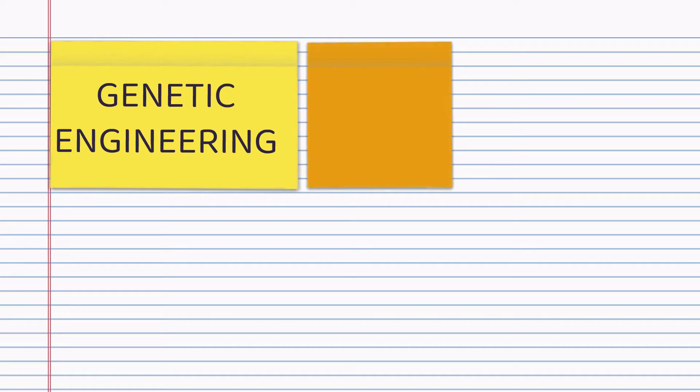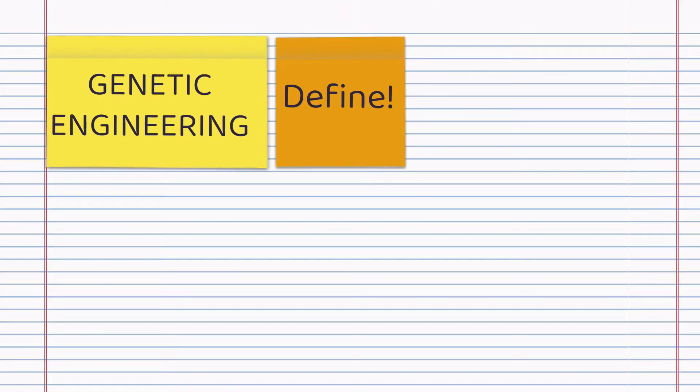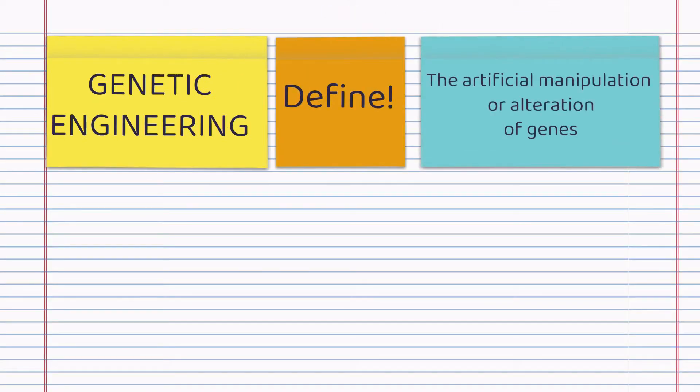This video is to help you revise genetic engineering as quickly as possible, so it's a very brief run-through of this topic. You start with defining what genetic engineering is. It's the artificial manipulation or alteration of genes. So start there, write the definition.